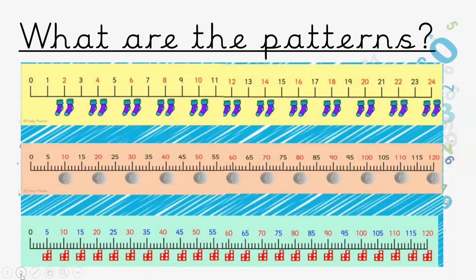And then tens — easy! Ten, twenty, thirty, forty, fifty, sixty, seventy, eighty, ninety, a hundred, a hundred and ten, a hundred and twenty.